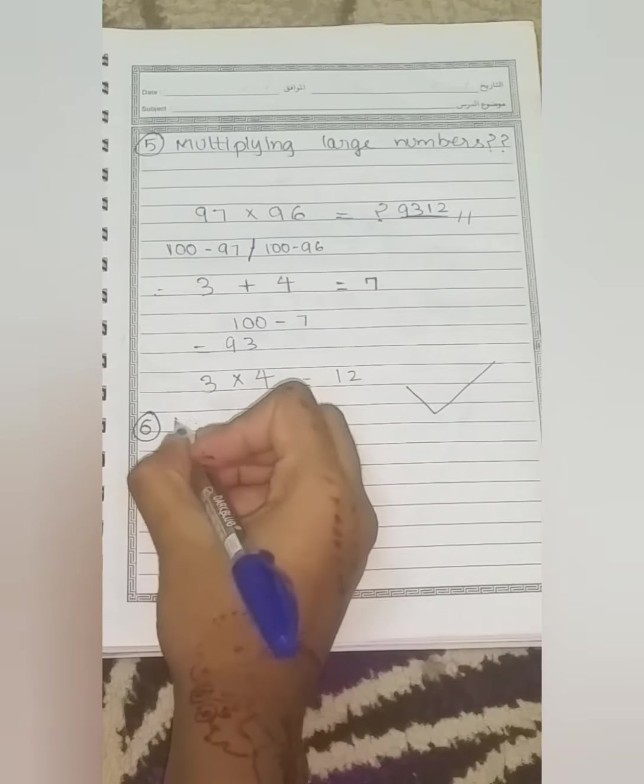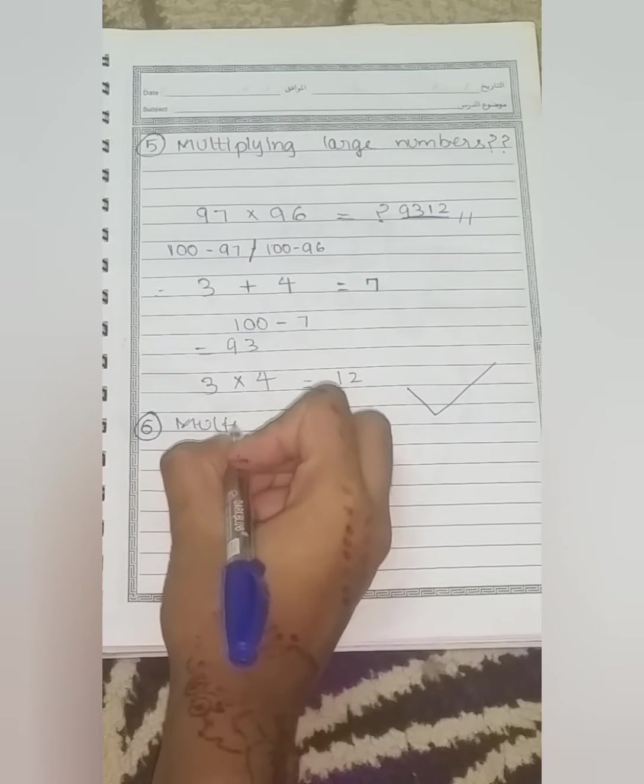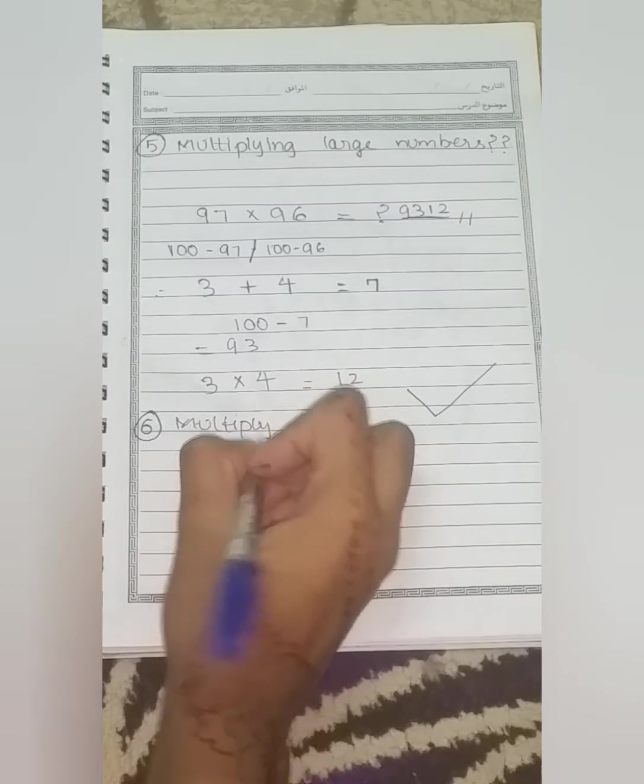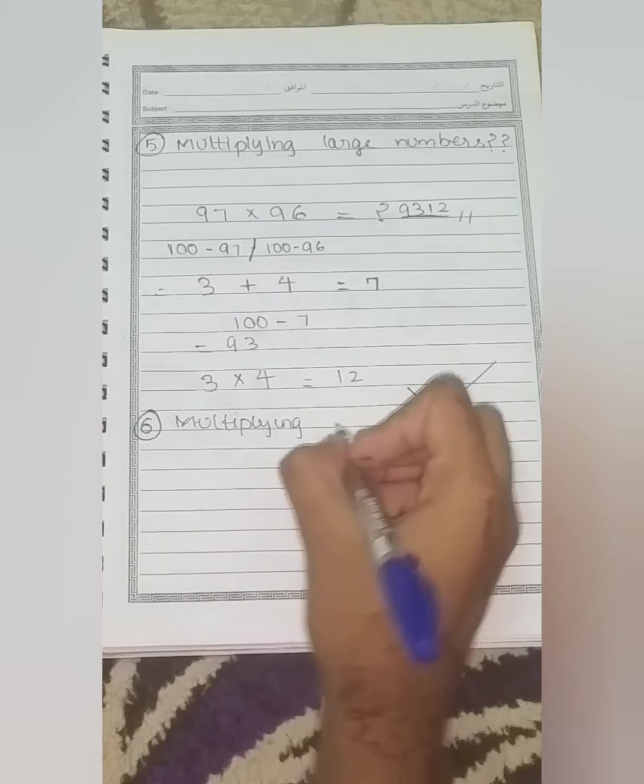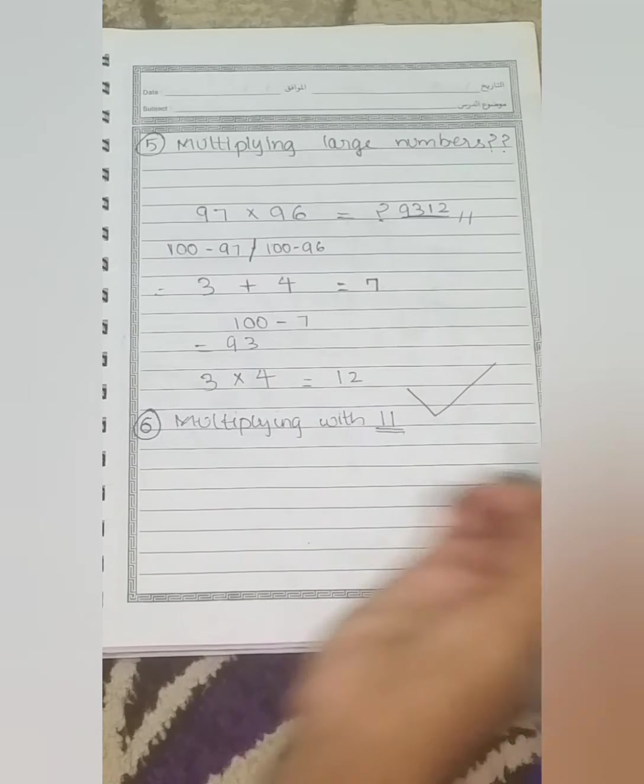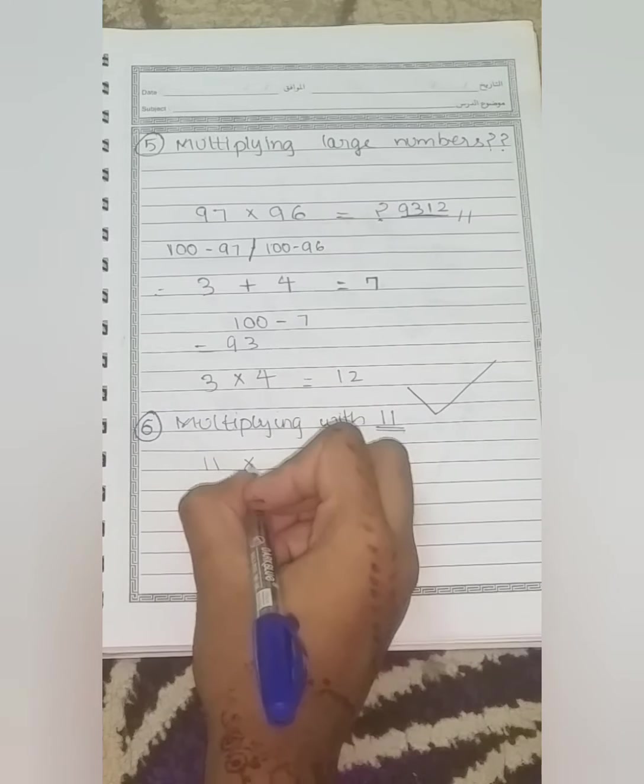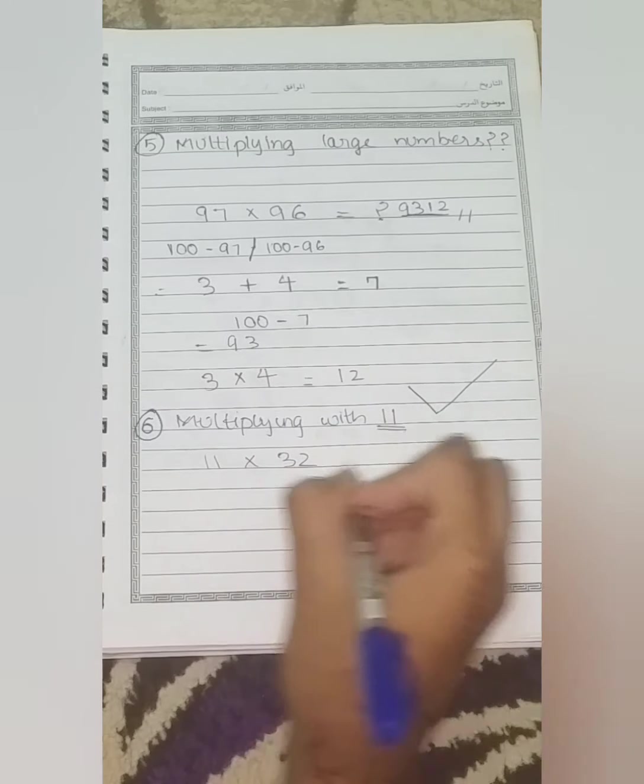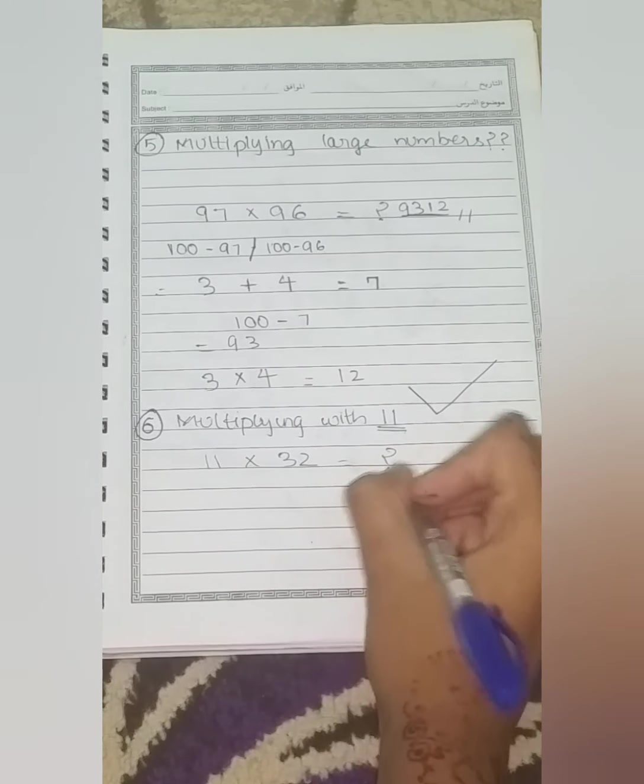The multiplication of 11 seems very easy to you guys. So how to find the multiplication of 11 when the numbers are too large? So let us see this very easy and superb hack. So first of all, here we got the number 11 into 32.